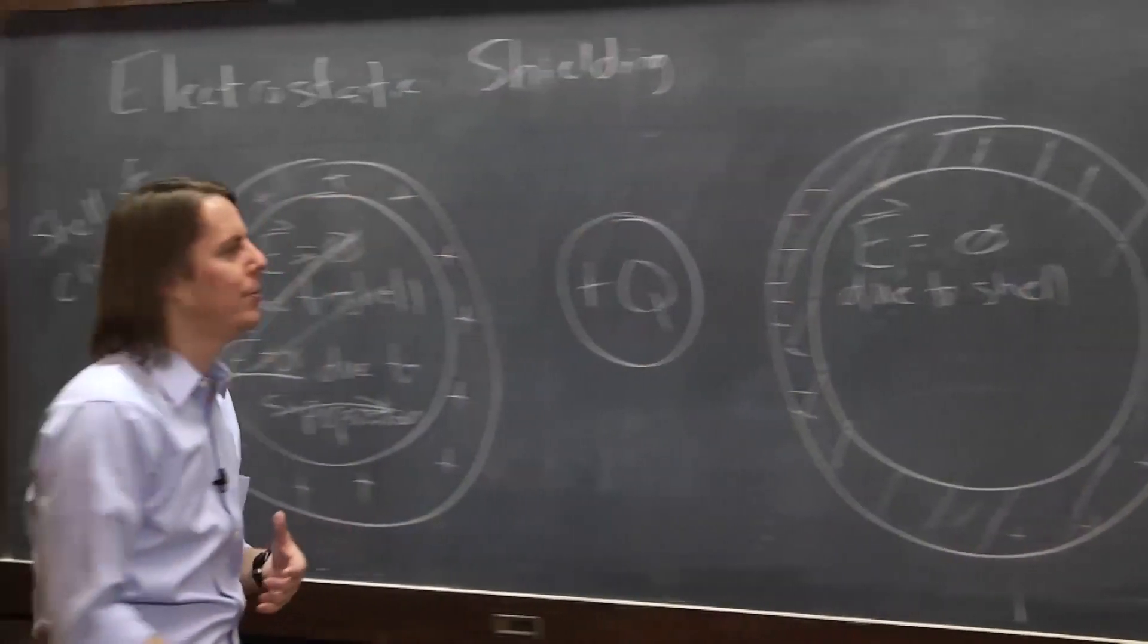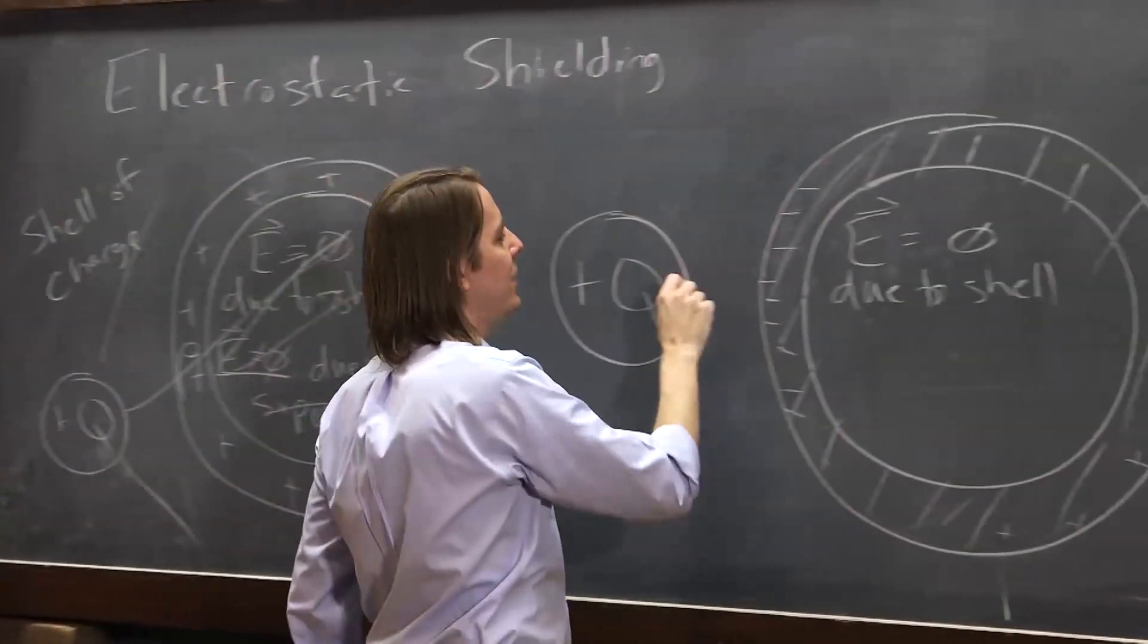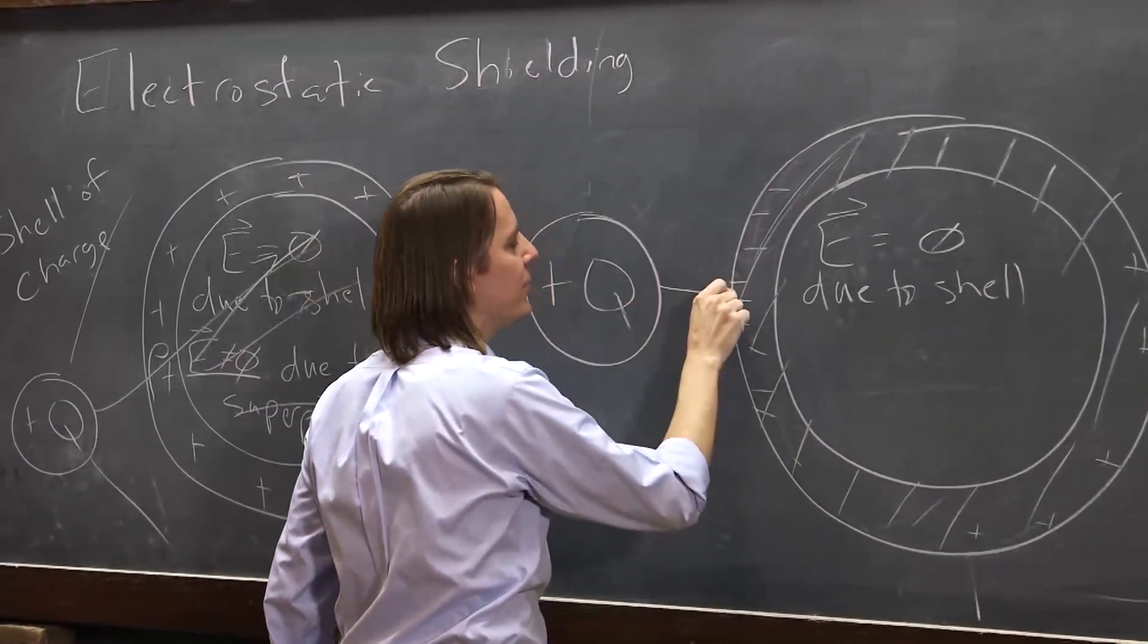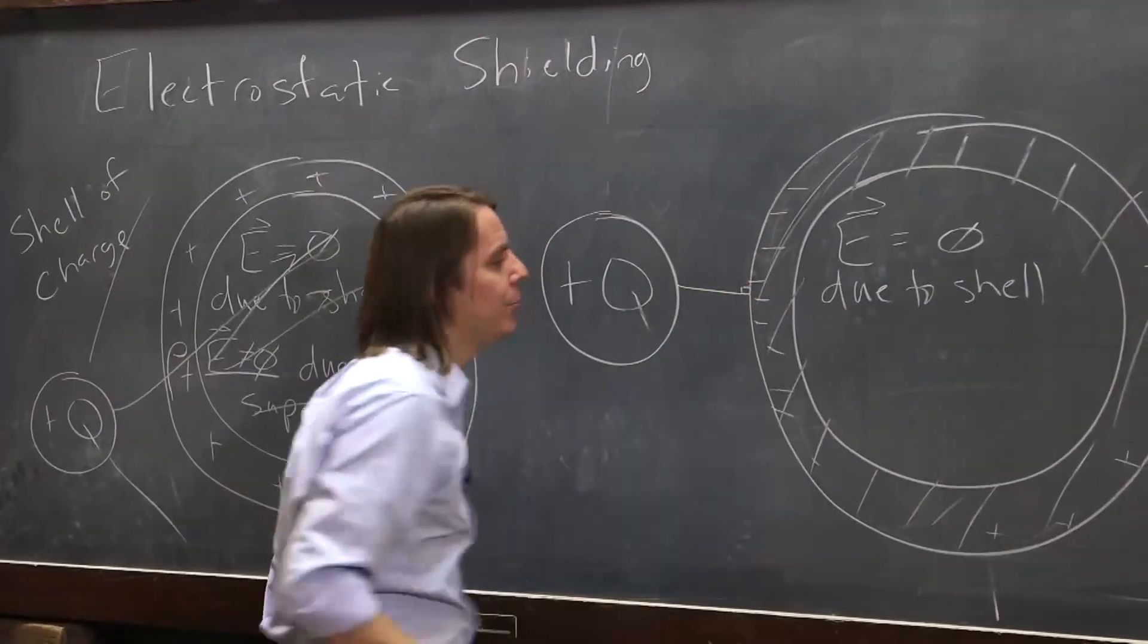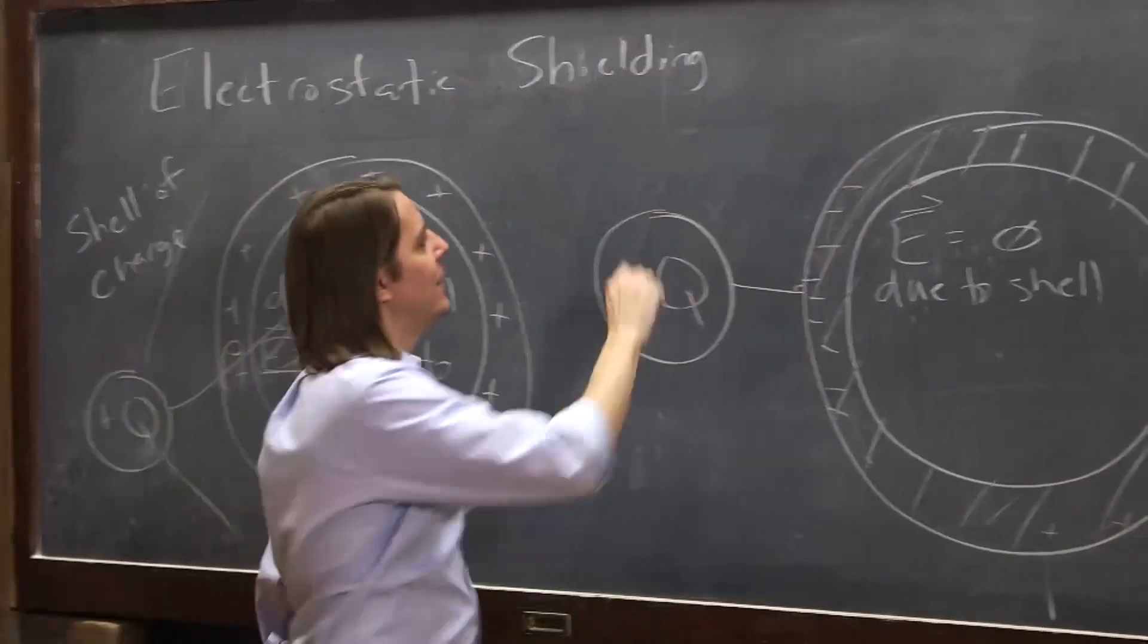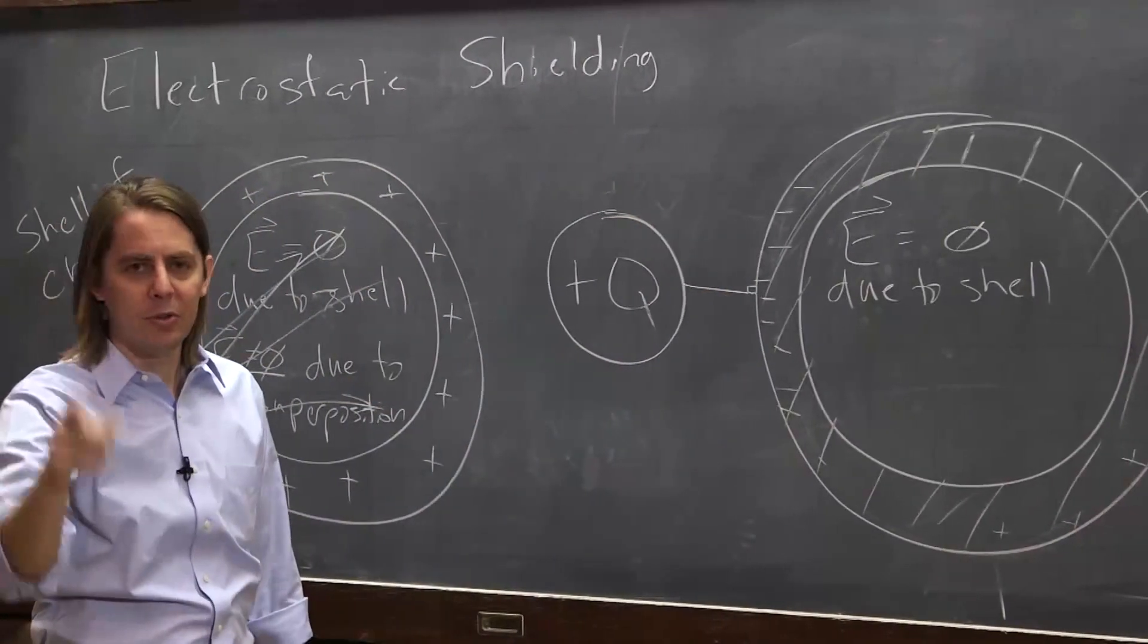So what it'll do is it'll warp the field lines. Instead of having them sort of bend around and go through, every field line that approaches the metal surface, we know outside of a metal, will end perpendicular to the surface. And that basically means the field line is terminating, right? Field lines always start on a charge, and they always terminate on a charge.